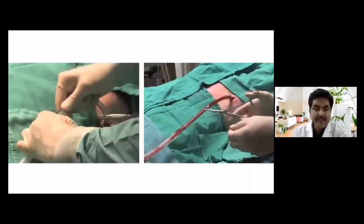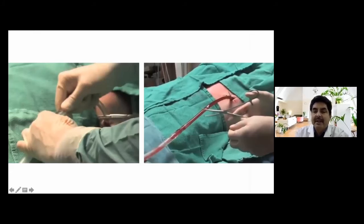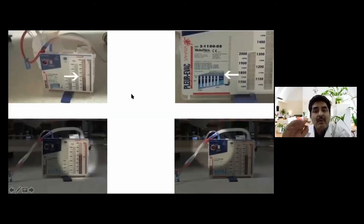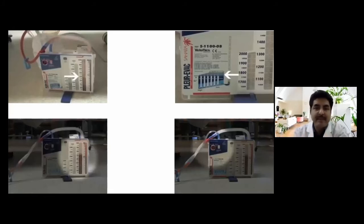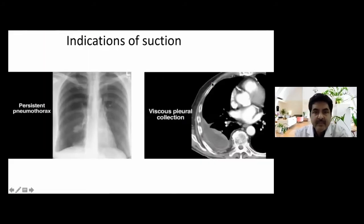After inserting the tube, it remains clamped on both sides — proximal and distal. Once fixed to the drainage bag, release the clamp and contents will flow out. If using a single bottle system, pour water to 100 ml — the tube must be underwater to create the seal. The standard system has three chambers: collecting chamber, underwater seal chamber, and suction device.